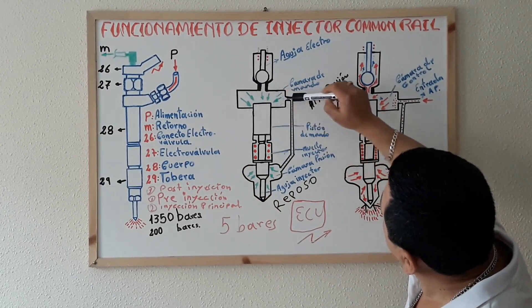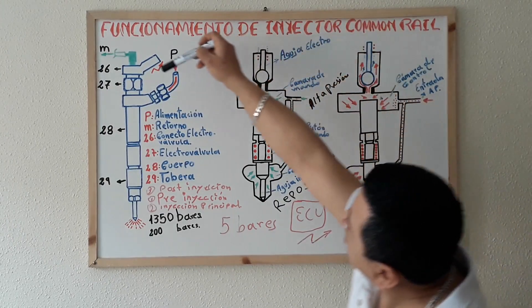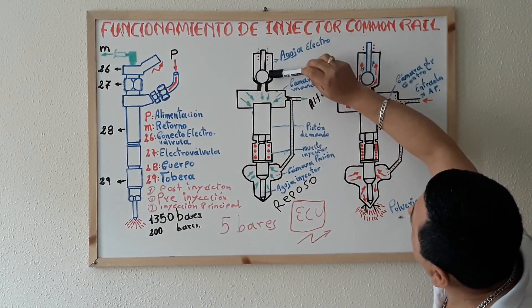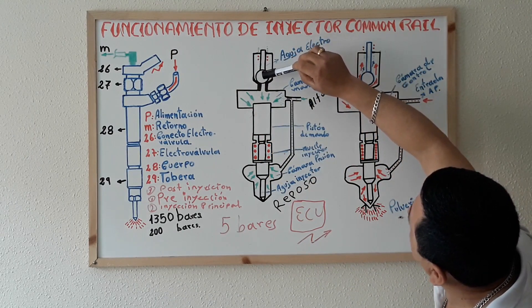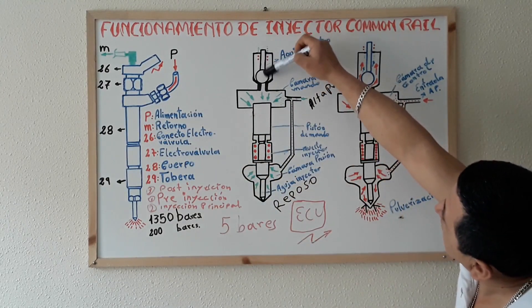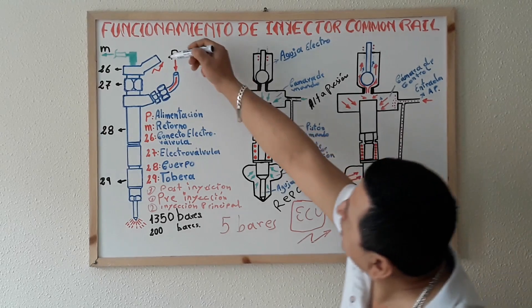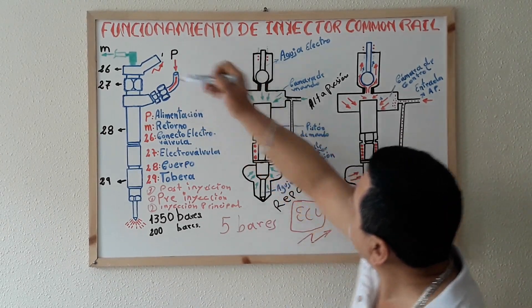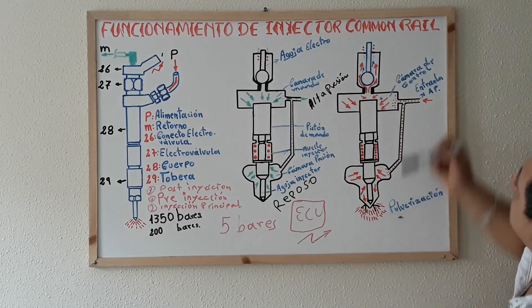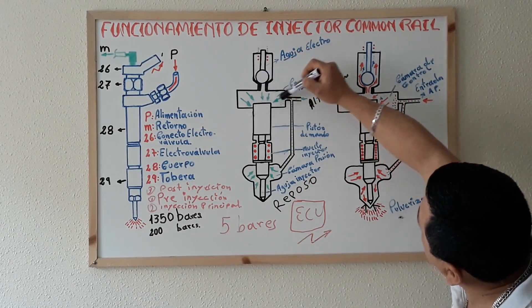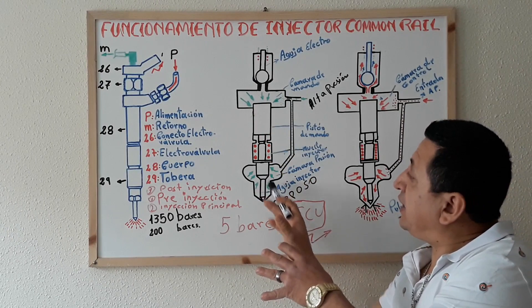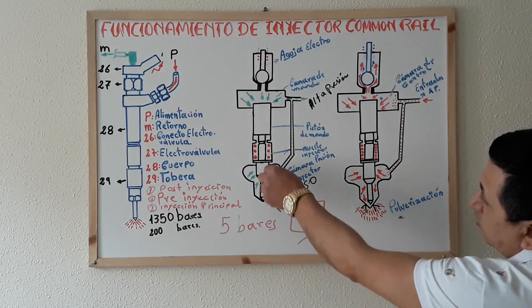Here we also have low fuel pressure. As there is no excitation in the piezoelectric element or solenoid coil, this is the solenoid valve needle. At this moment, since the ECU has sent no signal here, the injector is closed. On this side you can see it is closed. Here we have pressure, but very low pressure — not enough to open the needle in our nozzle.